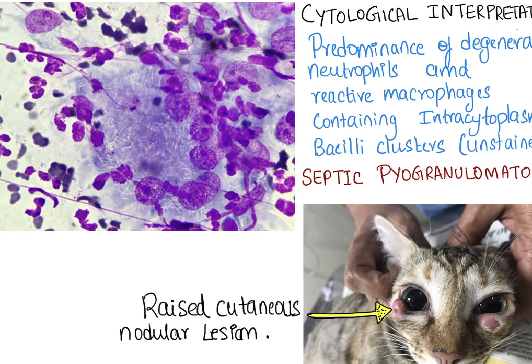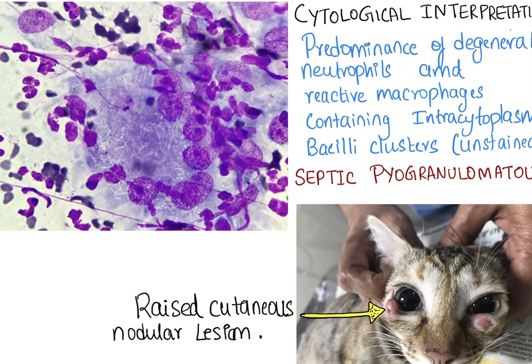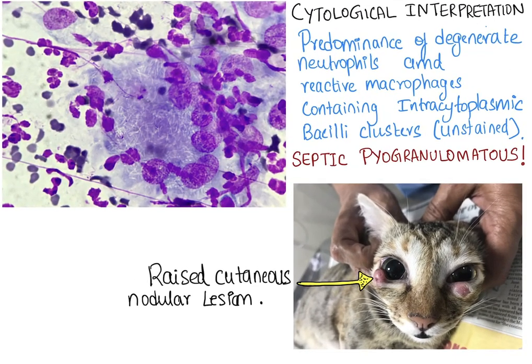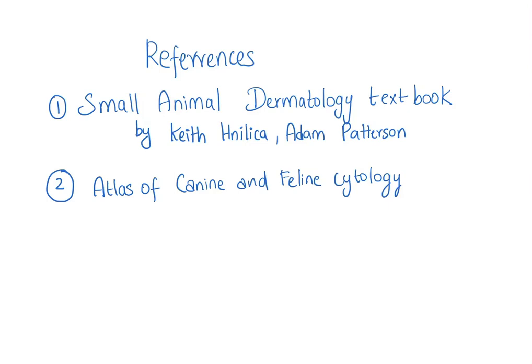The cytological interpretation was septic pyogranulomatous inflammation. The references for this presentation were taken from the Small Animal Dermatology textbook and the Atlas of Canine and Feline Cytology. I hope this video was informative — thank you so much for watching.